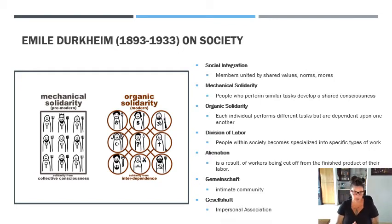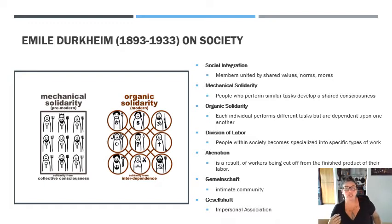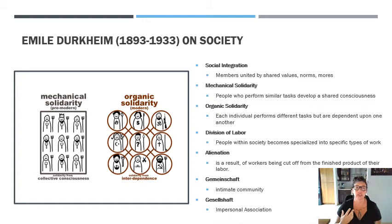Theoretically, what Durkheim says is that members of a society, because they share their norms, values, and mores, are socially integrated. The more that you share norms, values, and mores, the more socially integrated you are. When you lack social integration into society, it's called anomie — you are basically lacking that connection.